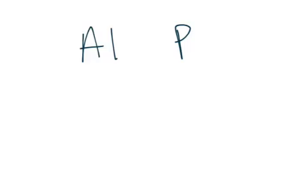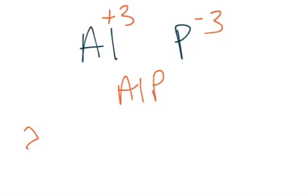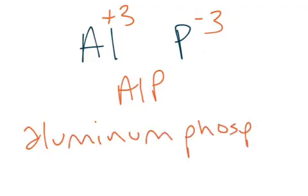Aluminum bonding to phosphorus — we've got to look up those oxidation numbers and figure out how they relate. Aluminum is in group 13, plus 3. Phosphorus is in group 15, minus 3. So once again, it's a 1 to 1 ratio. The chemical formula is AlP, and that's going to be aluminum, and then we change it to phosphide.